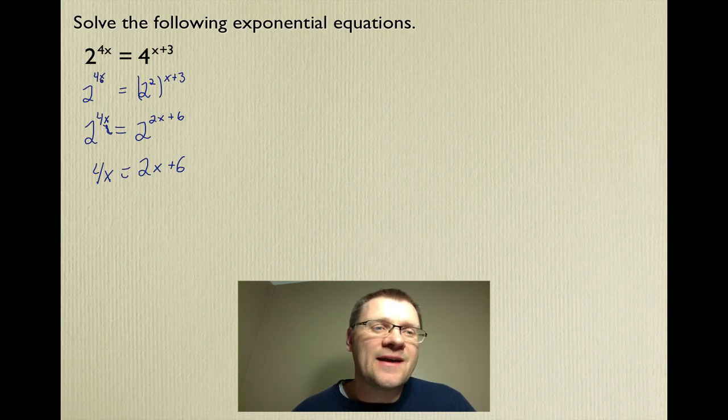If we didn't have the same base, we can't say the exponents are equal. So we have 4x equals 2x plus 6. To solve this equation, we subtract 2x from both sides, so we get 2x equals 6. That means that x equals 3. And remember, you can always just substitute this 3 back into the equation, check both sides, and see if it works.